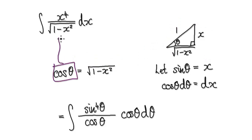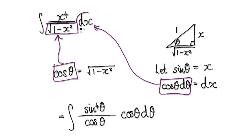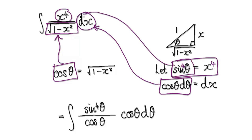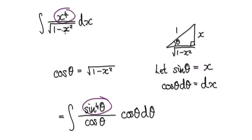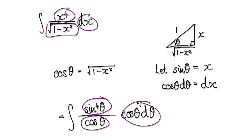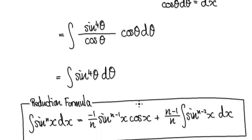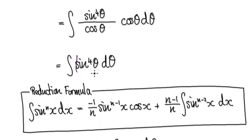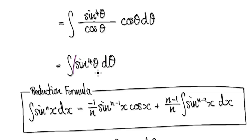Now we can put this into the complicated bit here, and put the dx into this expression. x to the power of 4 will be sine to the power of 4, so we substitute sine to the power of 4 in here. After tidying this up, the integral becomes sine to the power of 4 dθ. Now it's just a matter of integrating this — there are a lot of ways of integrating this.